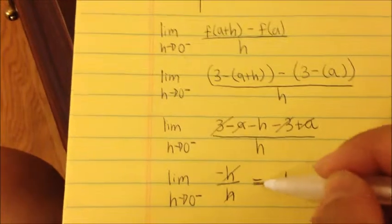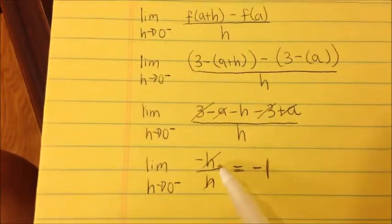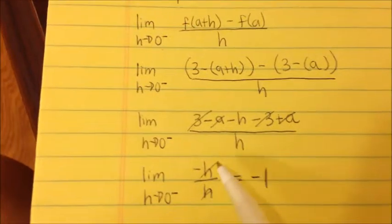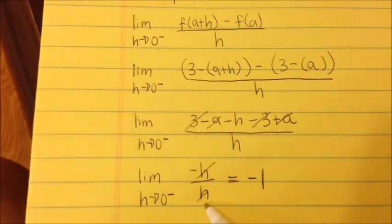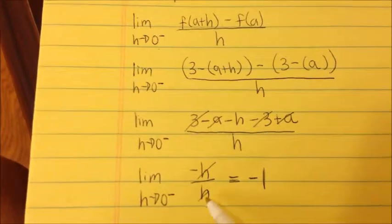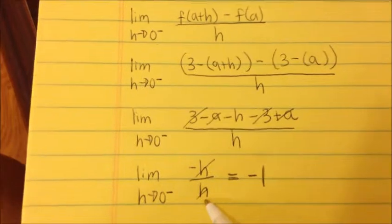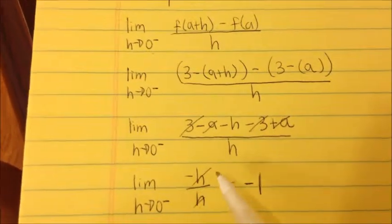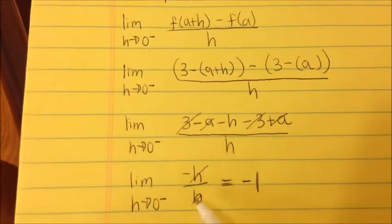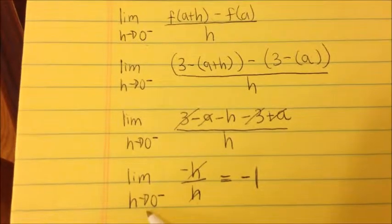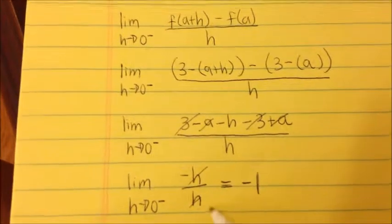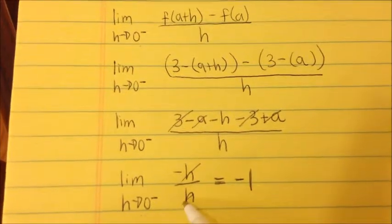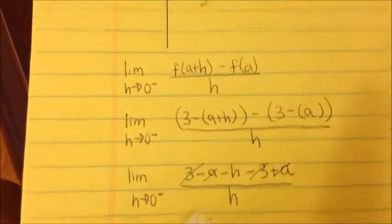We don't substitute 0 over 0 because that would be undefined — anything divided by 0 is undefined, as we covered in chapter 2. We want to simplify everything first. If you can't do anything with the h's, then that's when you substitute h equals 0. But here everything simplified, so the left-hand side gives us negative 1. Now let's try the right-hand side.